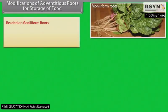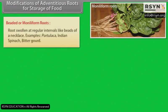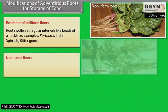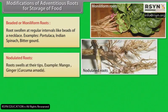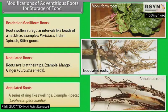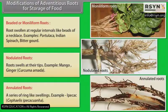Beaded or moniliform roots: Roots swollen at regular intervals like beads of a necklace. Examples: Portulaca, Indian spinach, bitter gourd. Nodulated roots: Roots swell at their tips. Examples: mango ginger. Annulated roots: A series of ring-like swellings. Example: ipecac.